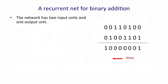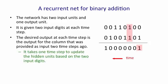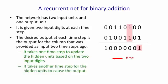So a recurrent neural net for binary addition needs to have two input units and one output unit. It's given two input digits at each time step. And it also has to produce an output at each time step. And the output is the output for the column that it took in two time steps ago. The reason we need a delay of two time steps is that it takes one time step to update the hidden units based on the inputs and another time step to produce the output from the hidden state.